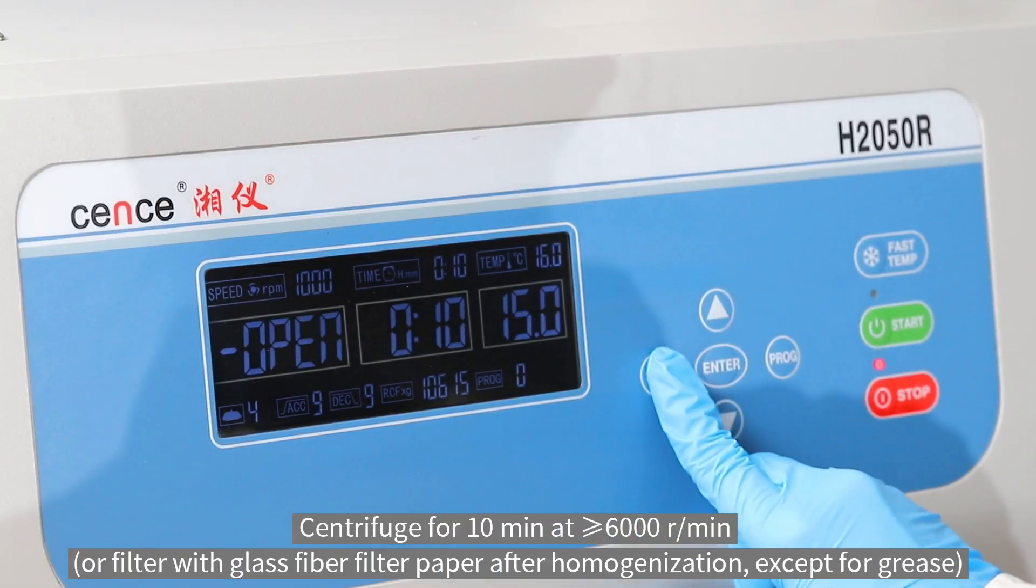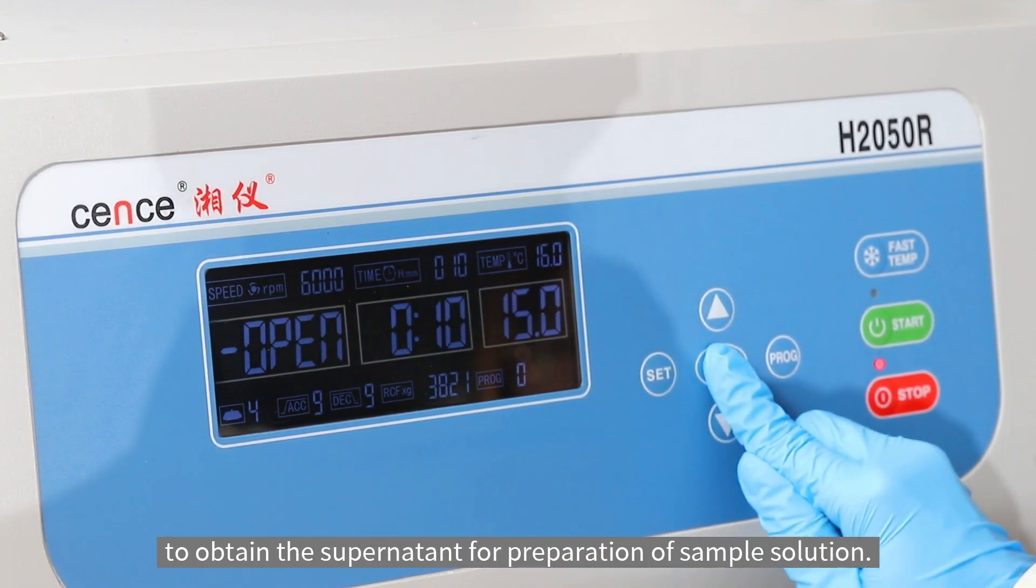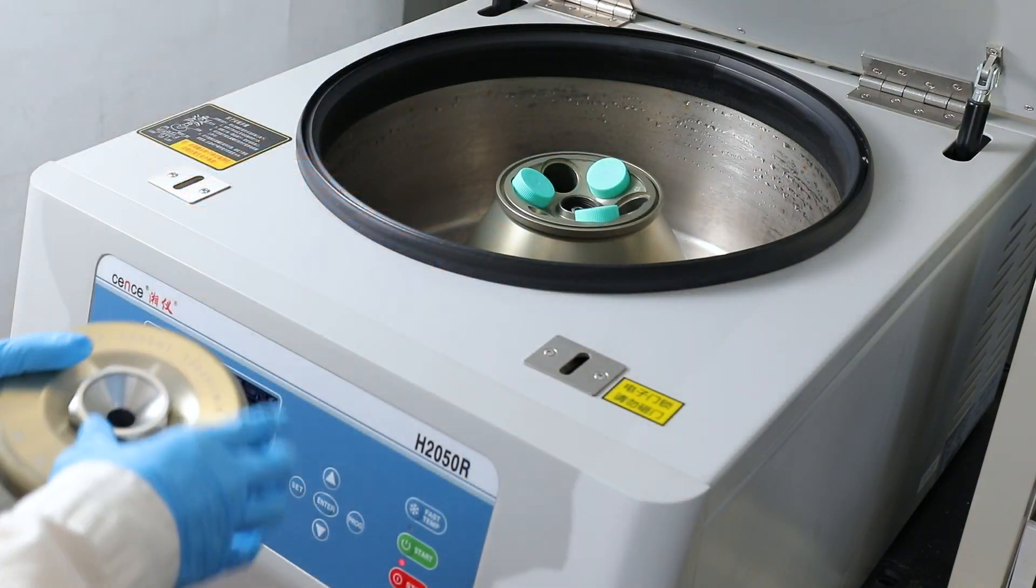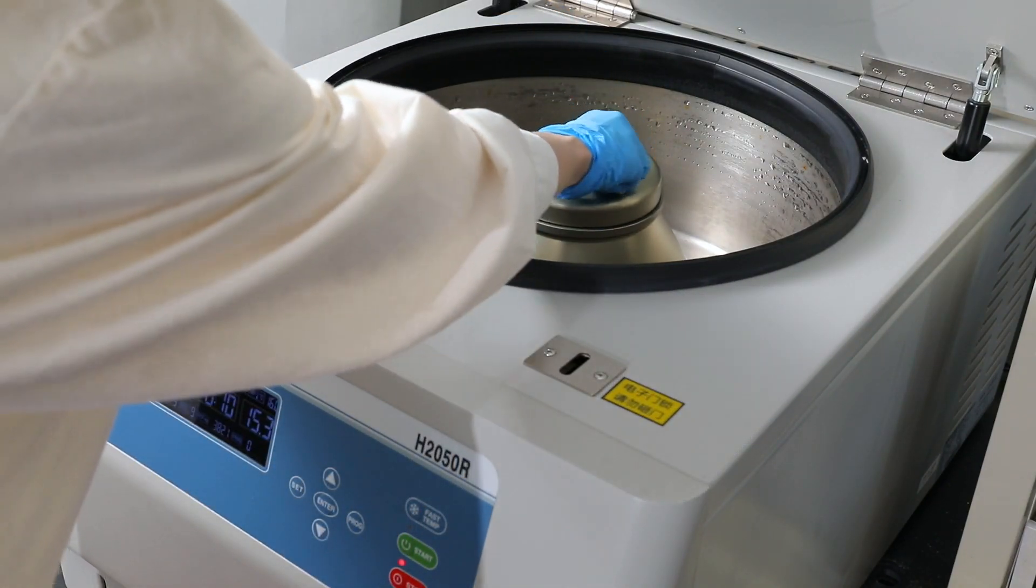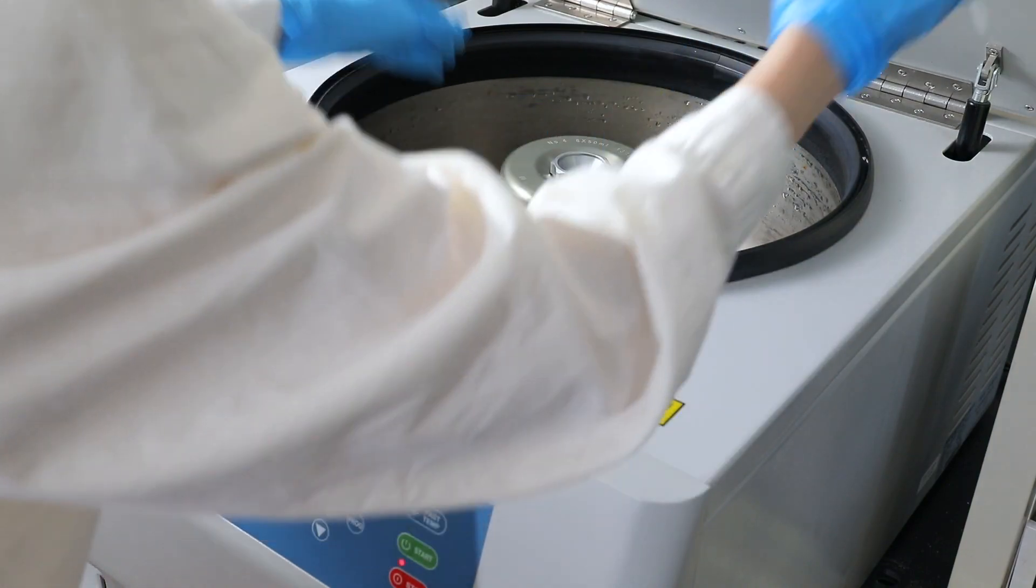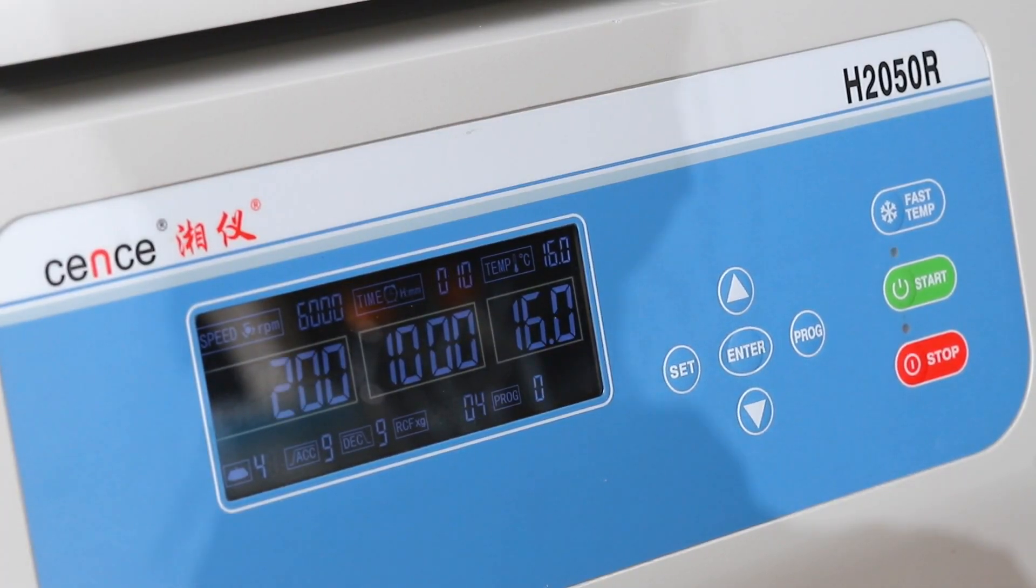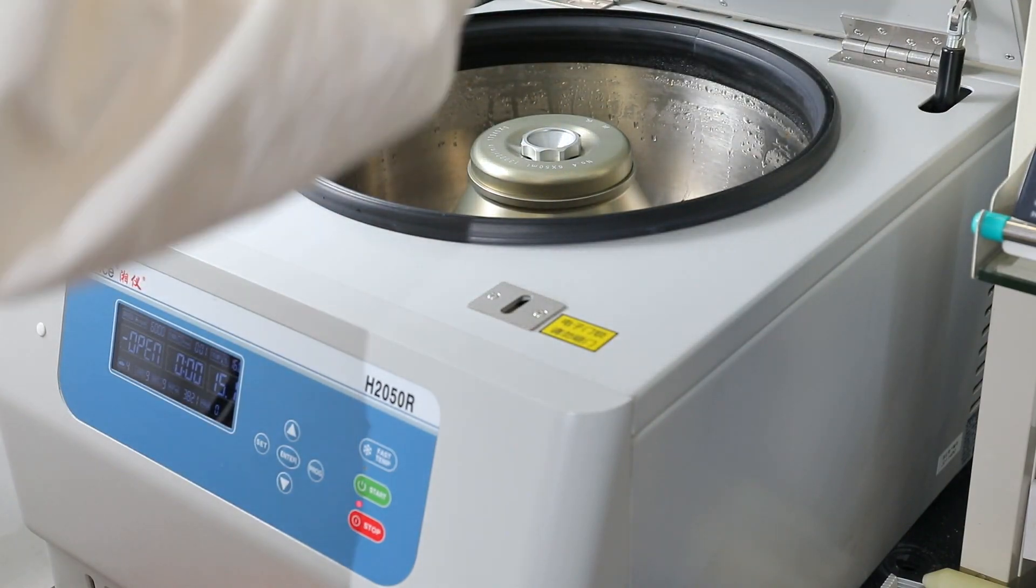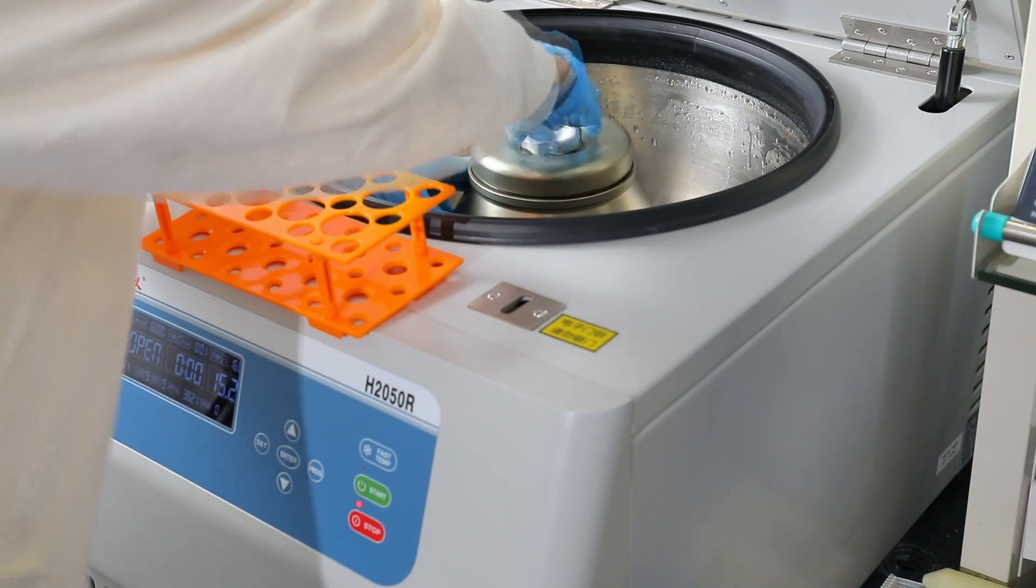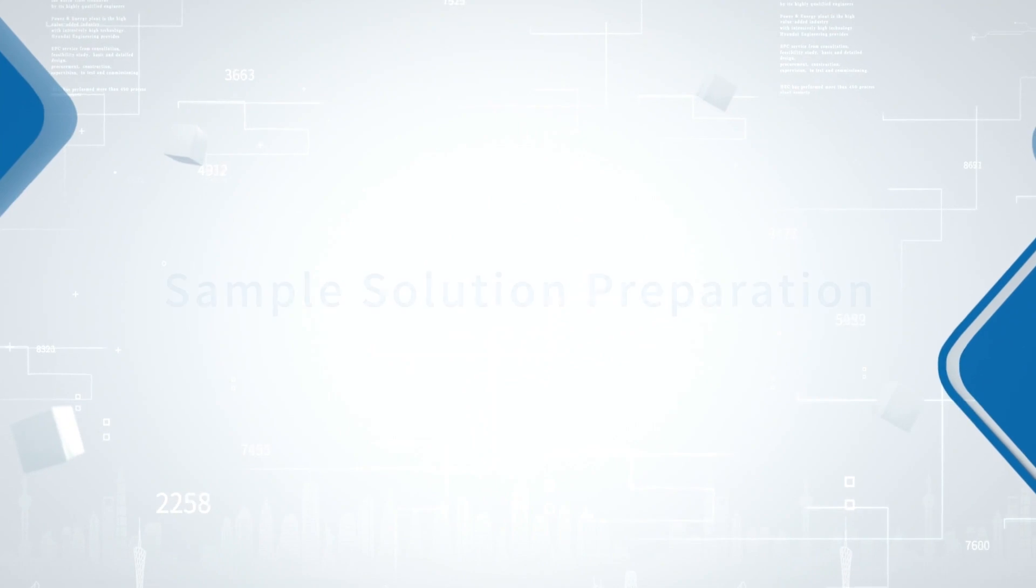Centrifuge for 10 minutes at 6000 rpm to obtain the supernatant for preparation of sample solution.